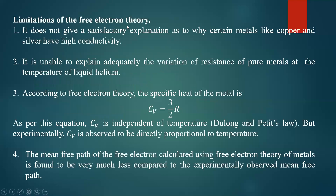What are the limitations of the free electron theory? Number one: it does not give a satisfactory explanation as to why certain metals like copper and silver have high conductivity. All metals have free electrons, but among them some metals have higher conductivity and some have lower conductivity. That cannot be explained by this free electron theory.